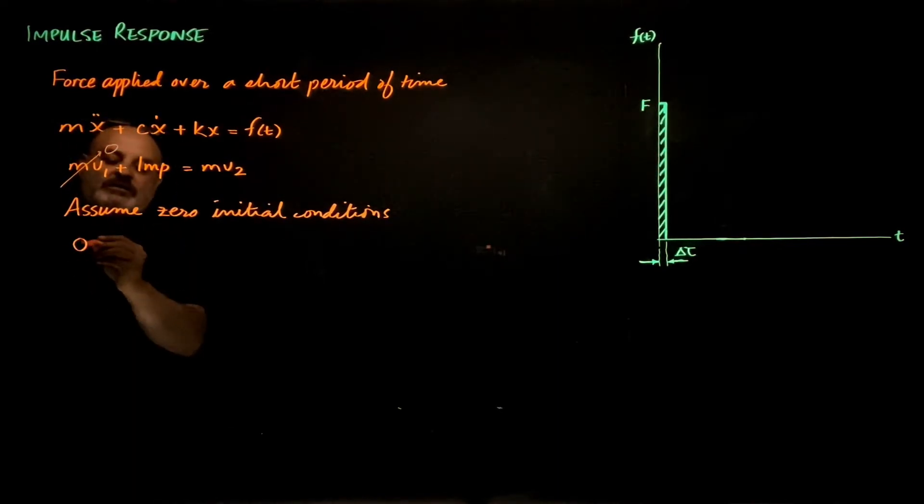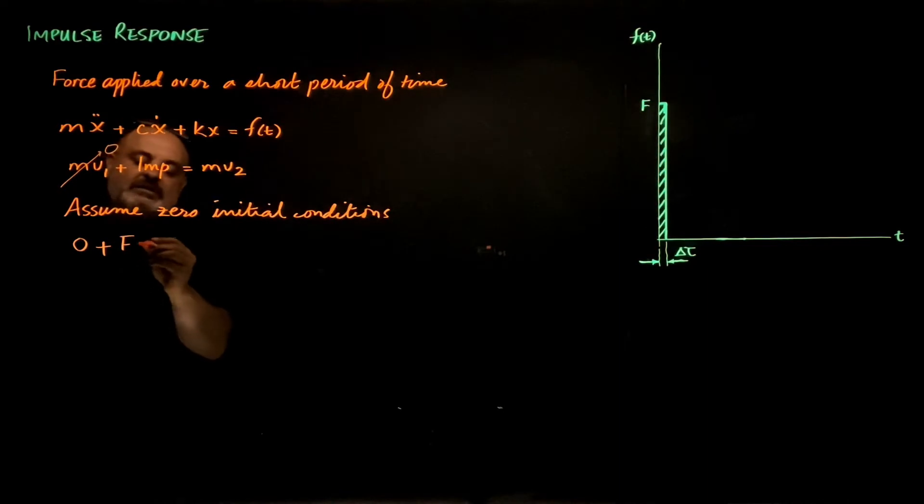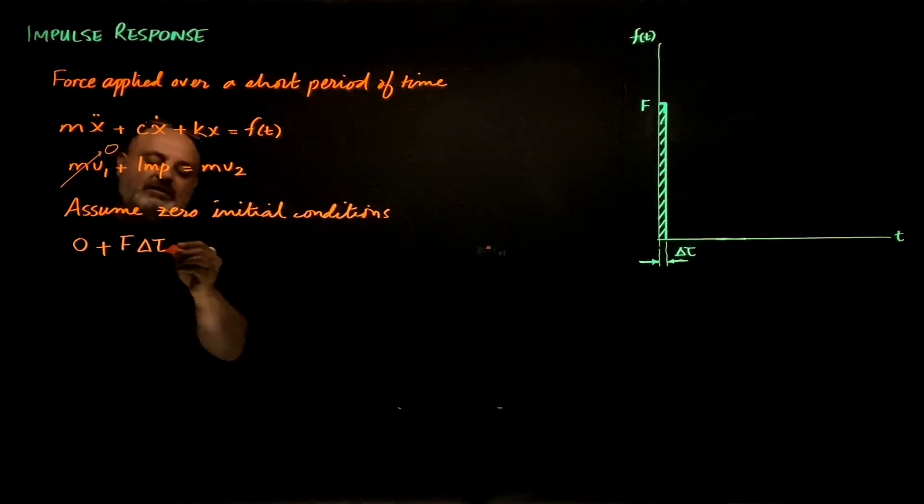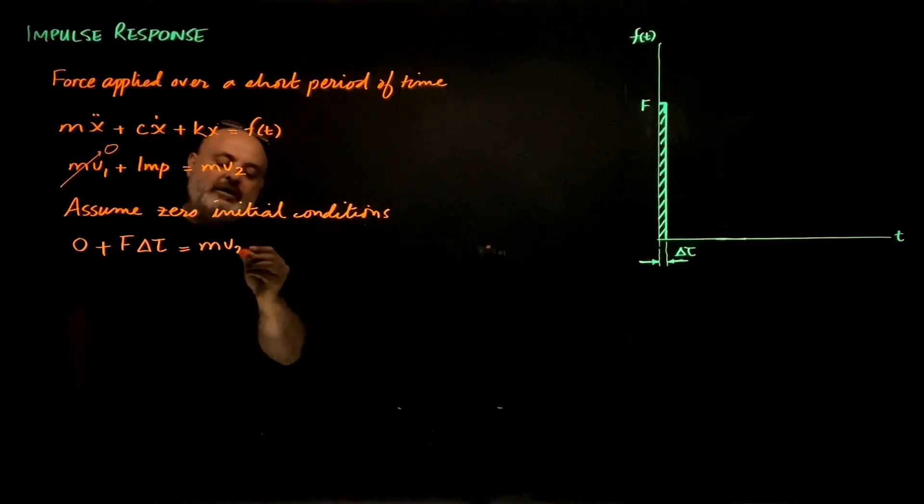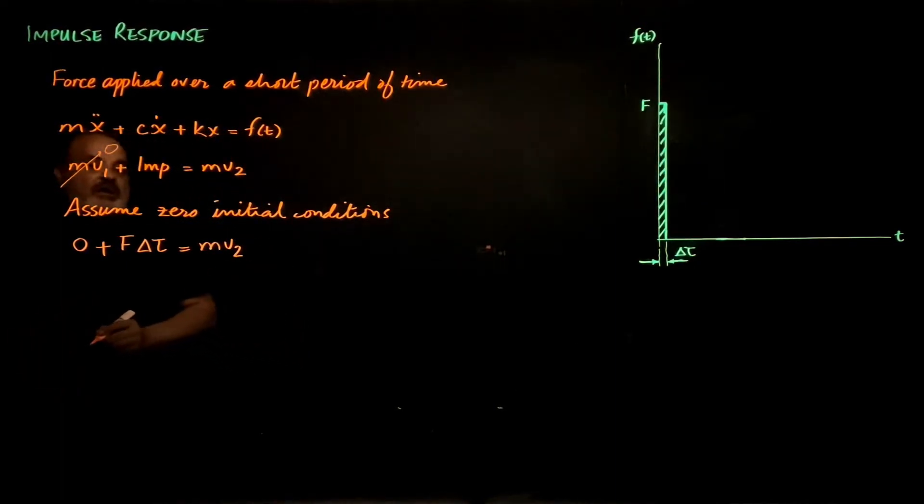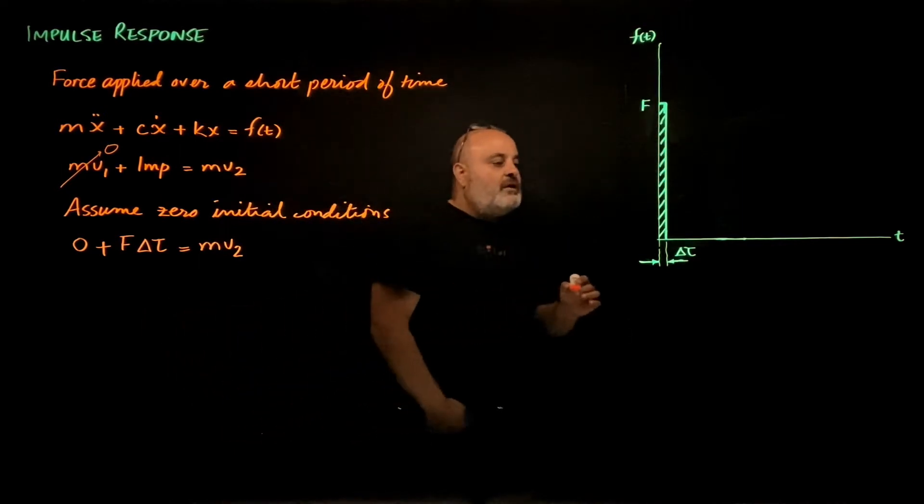So we have zero plus our impulse f times delta tau equals mv2.